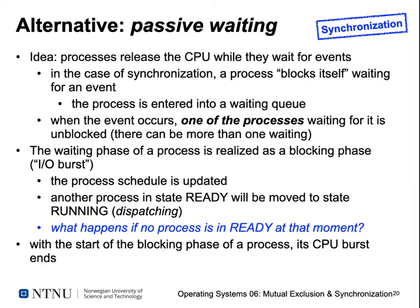The idea behind passive waiting is that a process no longer just continues to run through its loop, checking again and again for the condition that the critical section becomes free. Instead, the process actually releases the CPU while waiting for a new event. So if they want to run an acquire function and figure out that the critical section is just in use, it doesn't make sense to continue going through its active waiting loop over and over again.